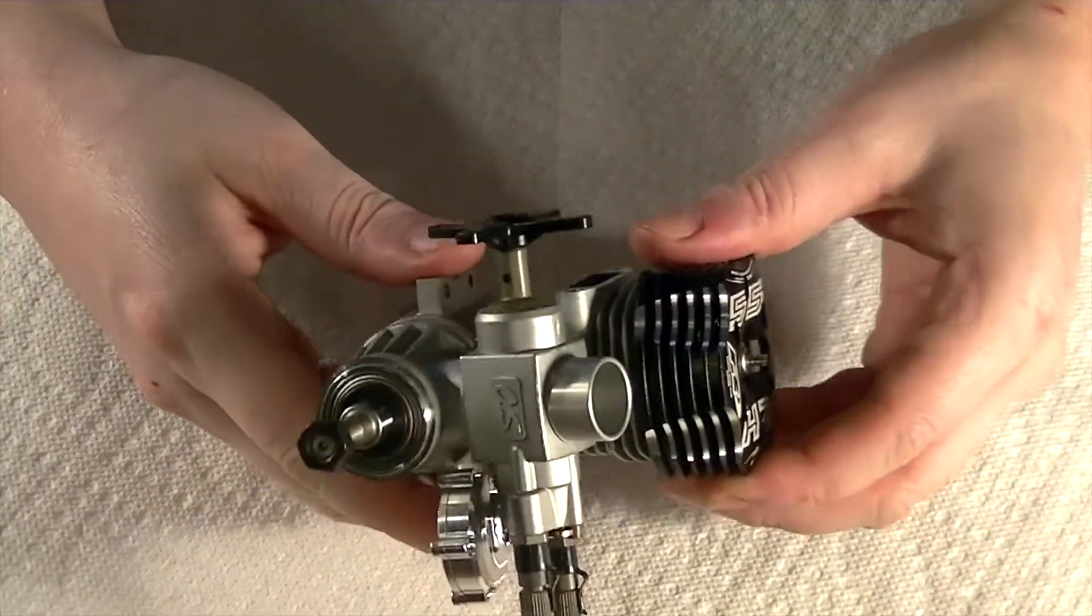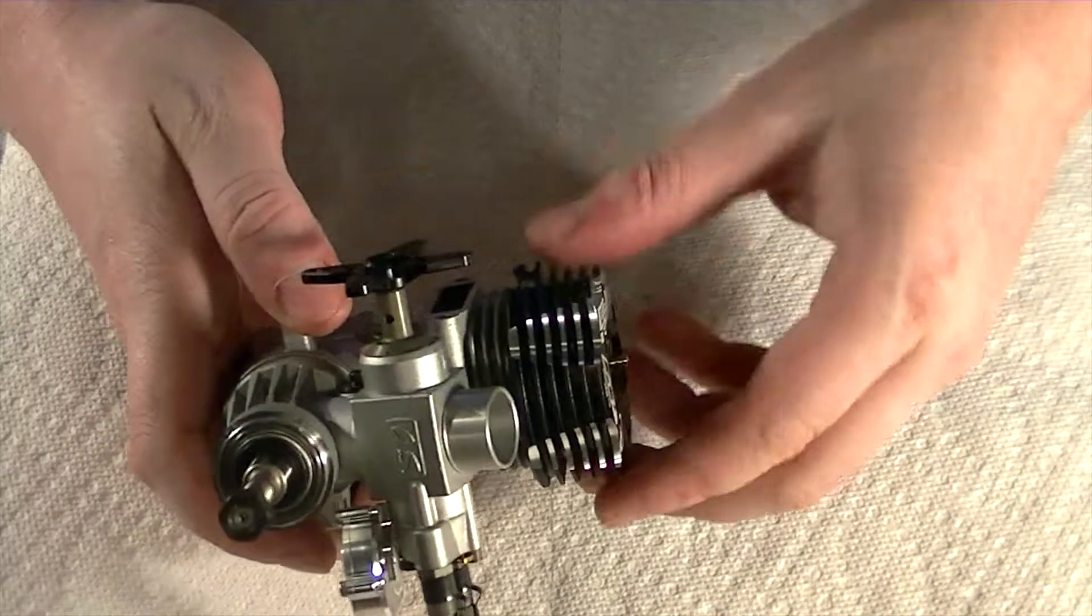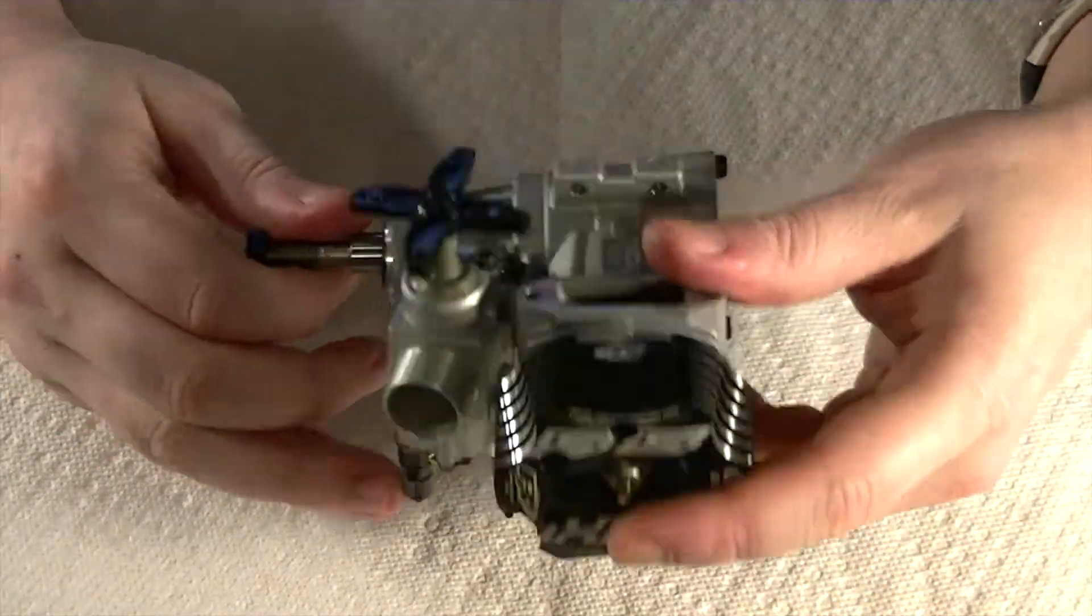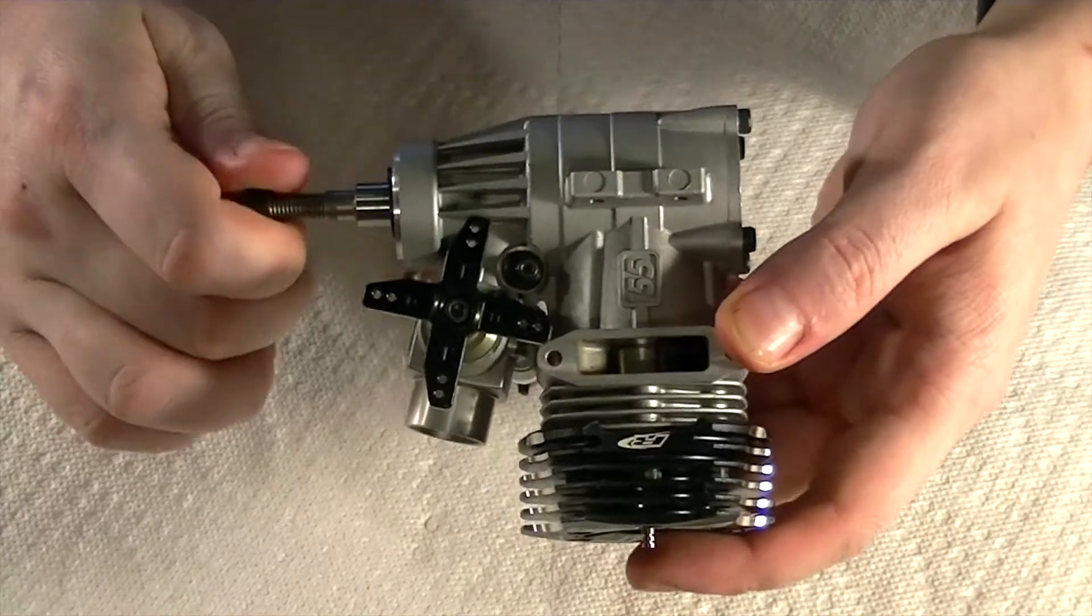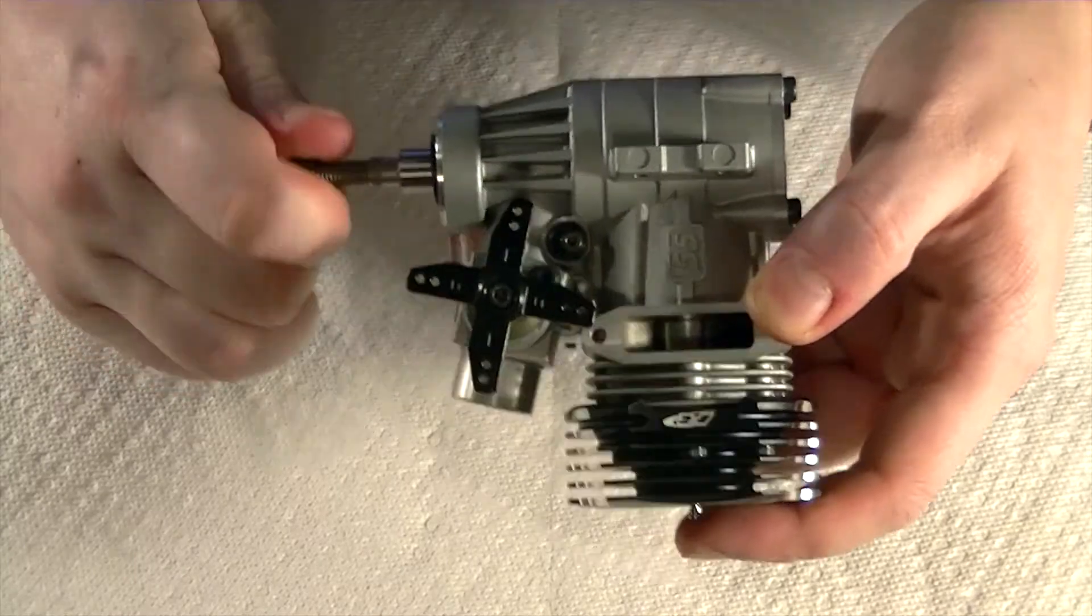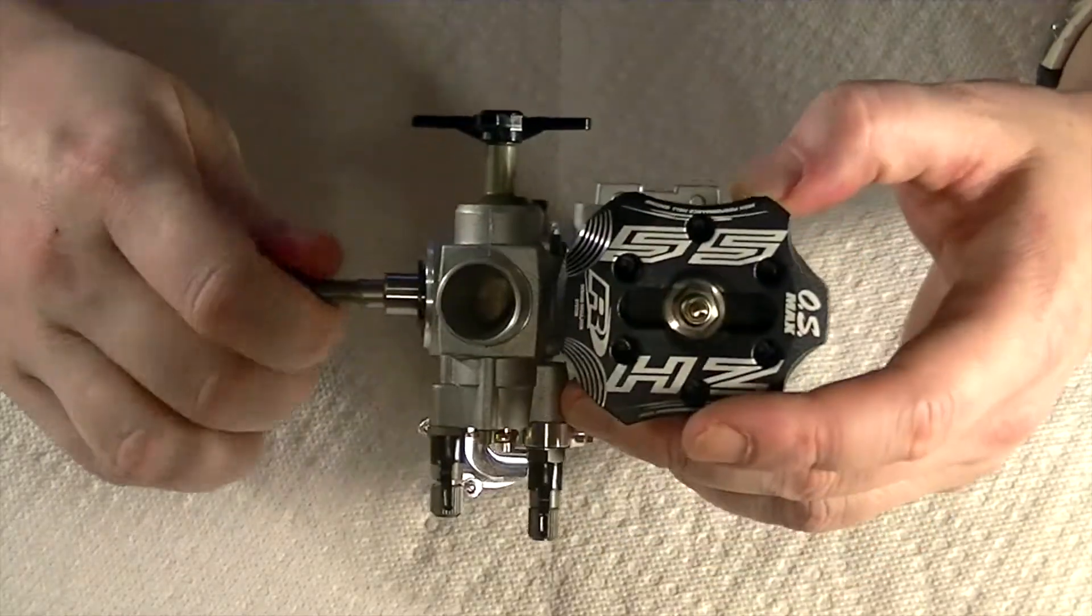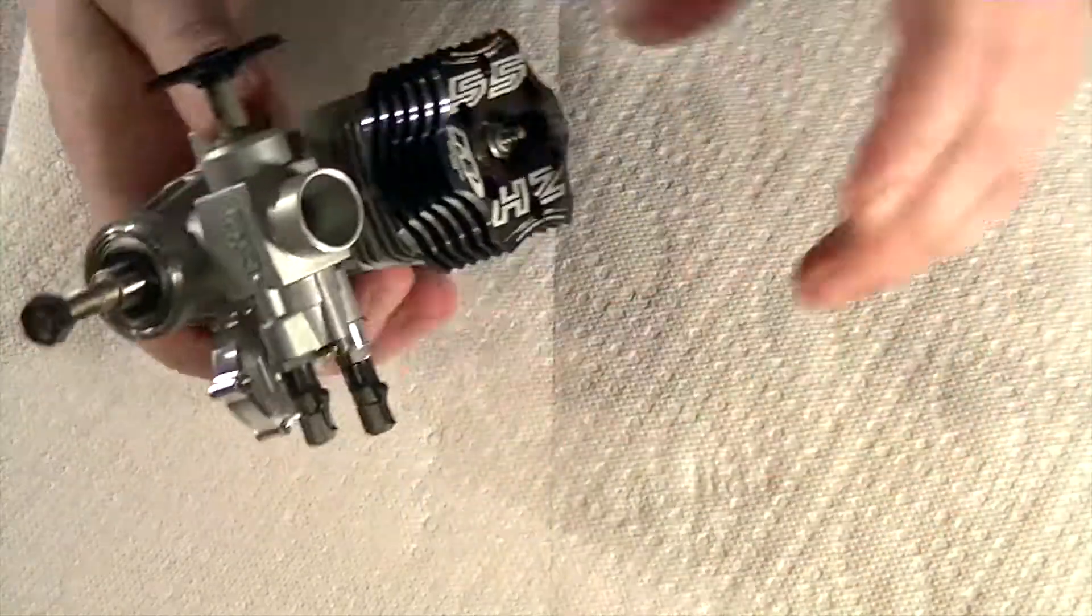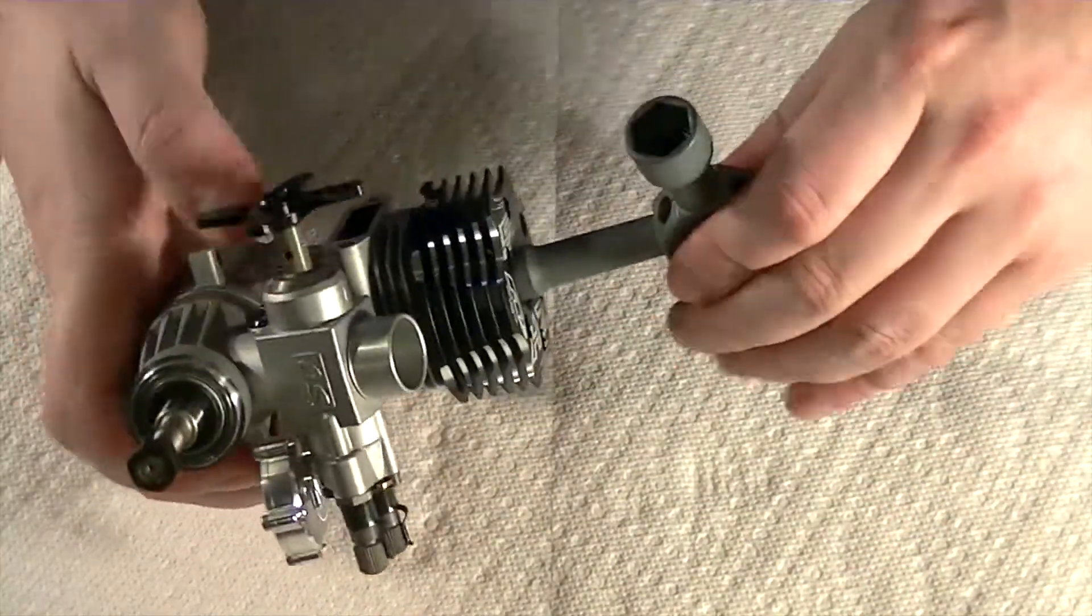Now the first step we're gonna look into is I usually remove the glow plug first. And the reason why I do that is you'll notice that with the glow plug in, you have that really tight compression, barely any room in there and then the air kinda squeezes and you get that hiss. And you can pop it. It makes it just complicated to turn things.